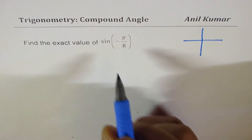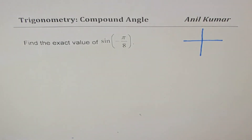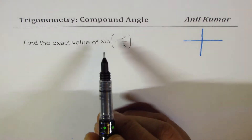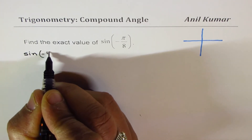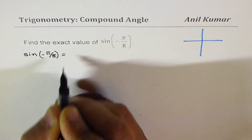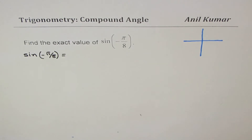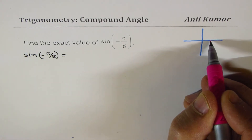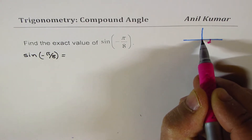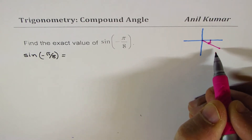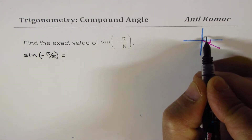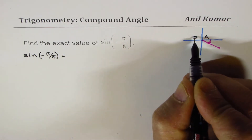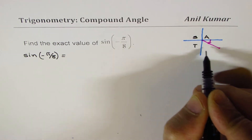To write this function as a related acute angle function, we can write sine of negative π/8. When I say negative π/8, that means we are in quadrant 4. Negative π/8 means you are in quadrant 4, and in quadrant 4 sine is negative. All are positive in quadrant 1; sine is positive in quadrants 1 and 2 but negative in 3 and 4.